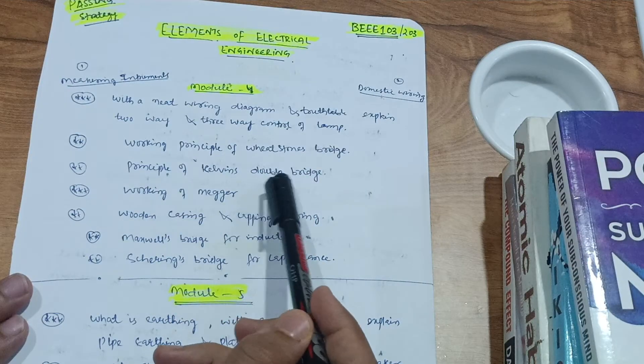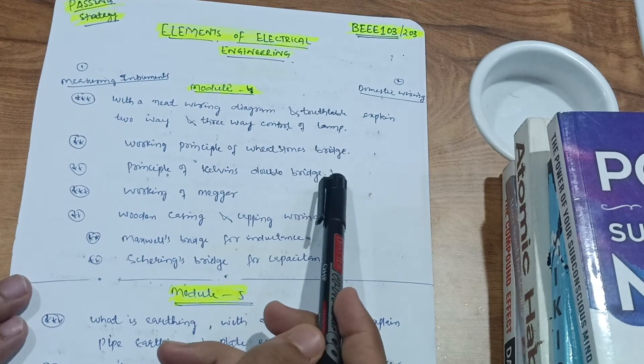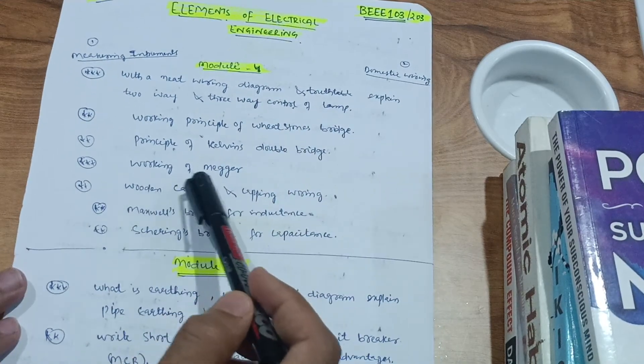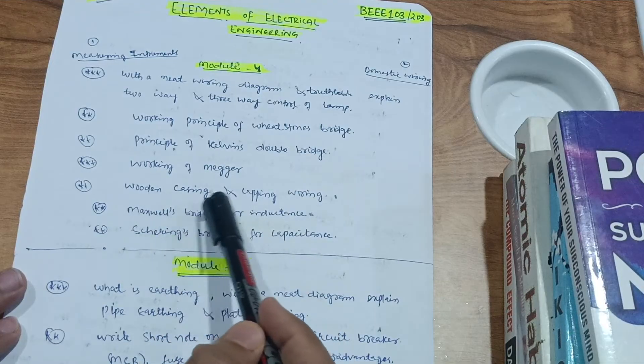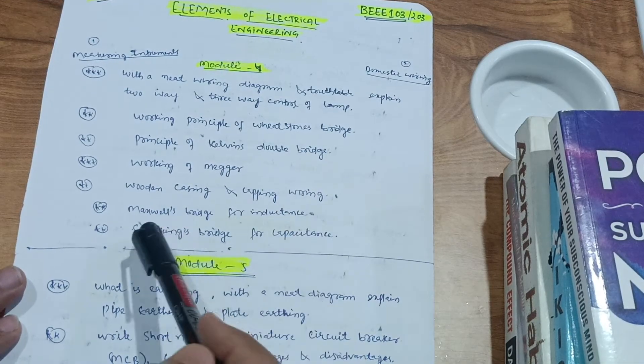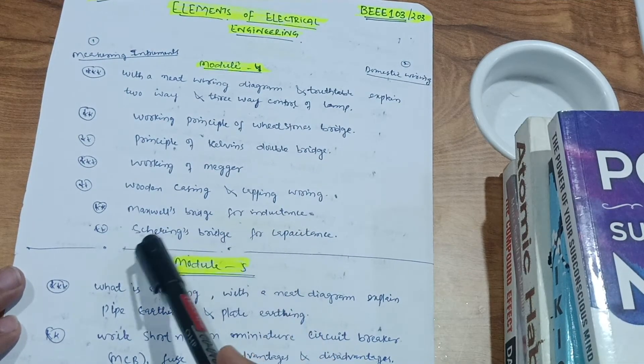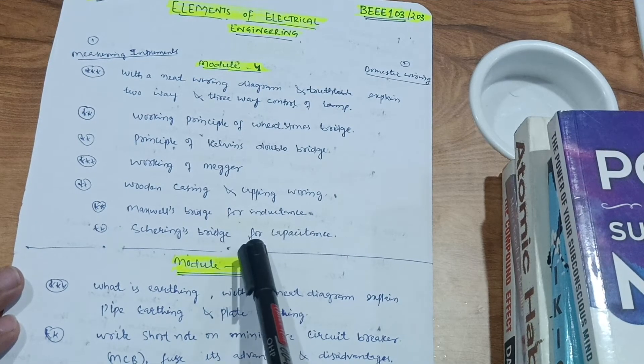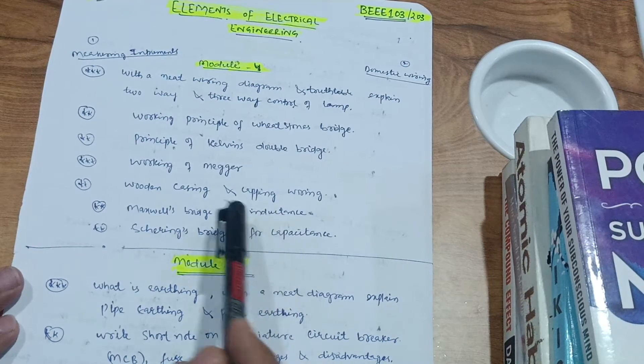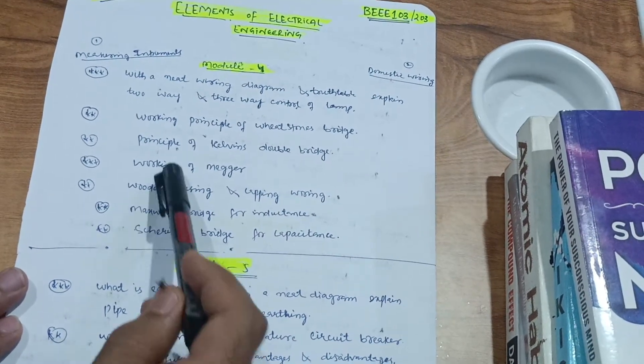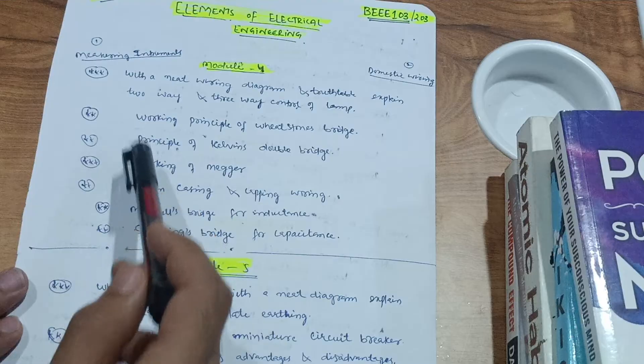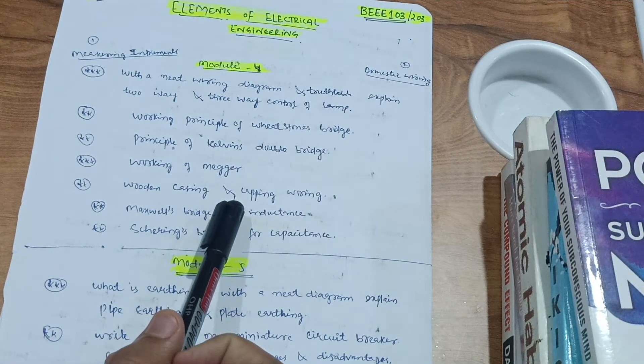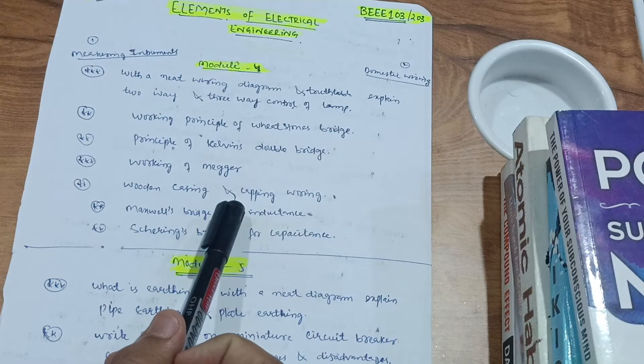Next is the principle of Kelvin's double bridge, a new topic which VTU has inserted this time into this particular module. Next one is the working of megger and wooden casing and caping wiring, Maxwell's bridge for inductance, and Schering's bridge for capacitance. Schering's bridge for capacitance is also a new topic. You have to focus on these six topics so that you will easily get 20 marks.